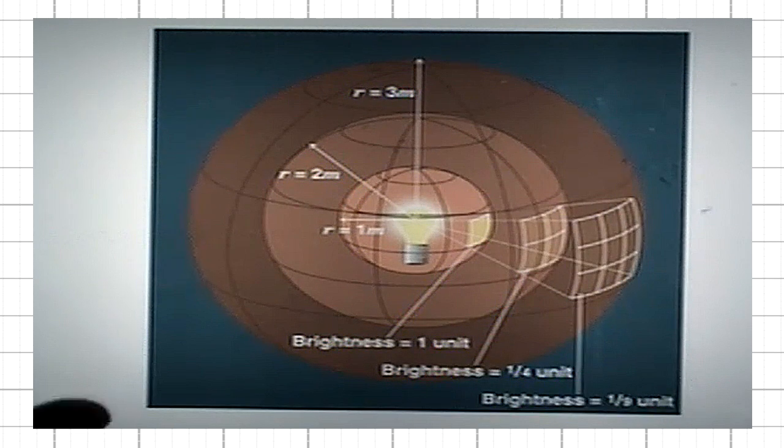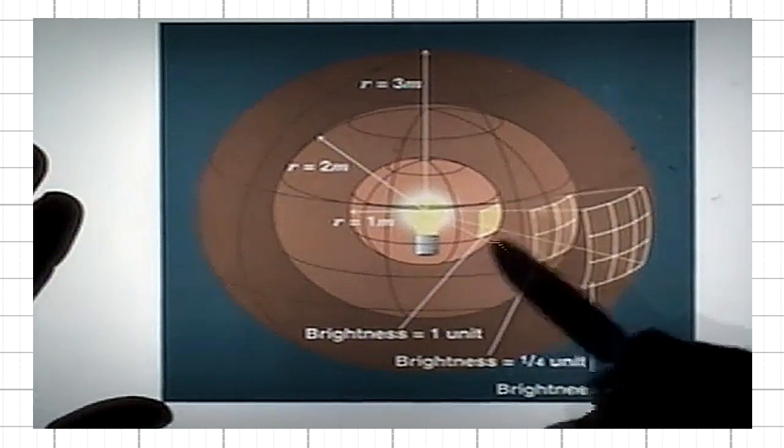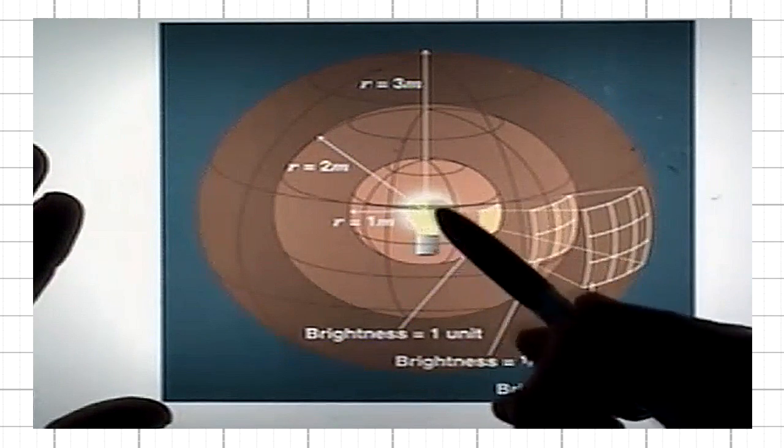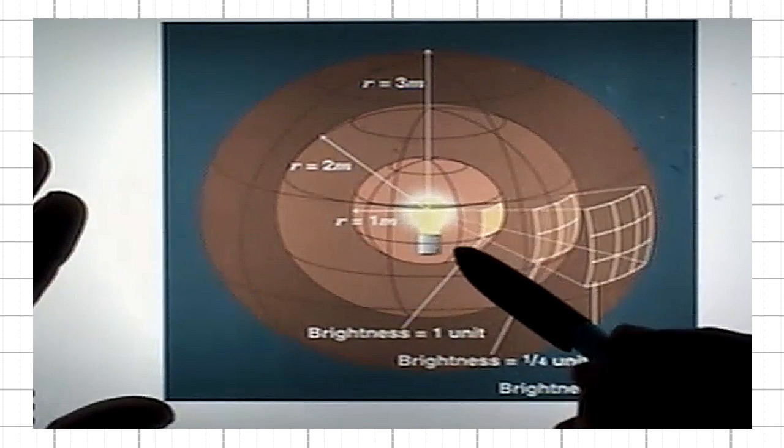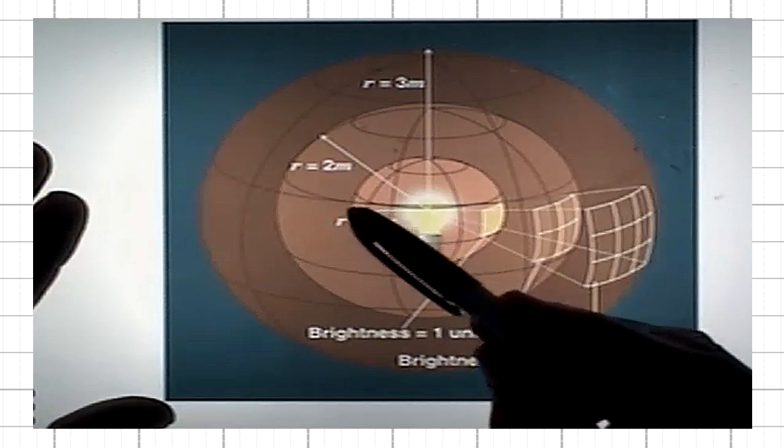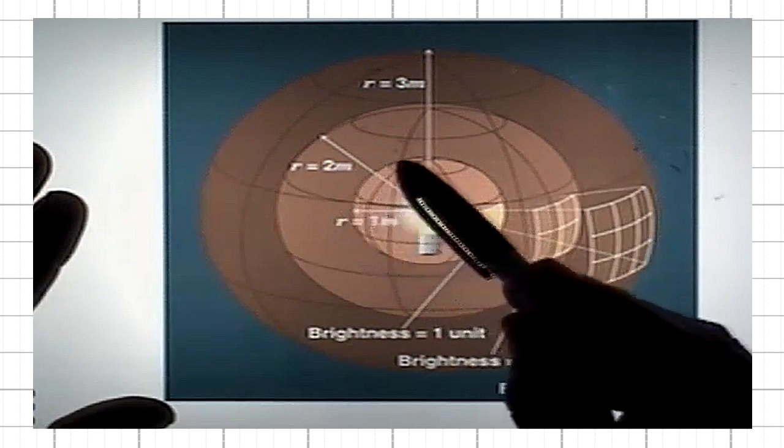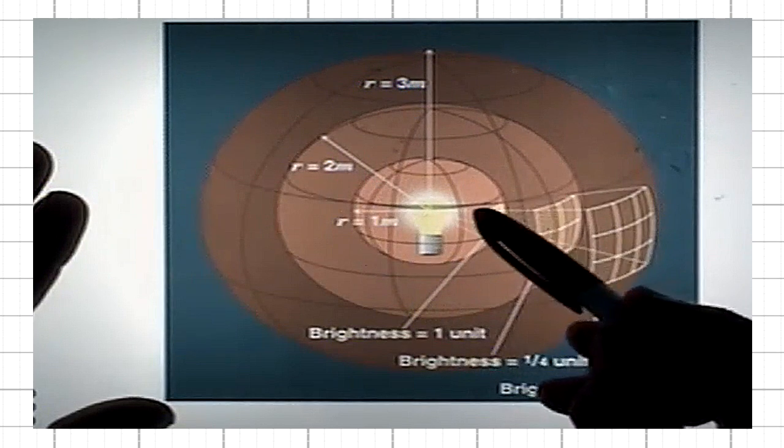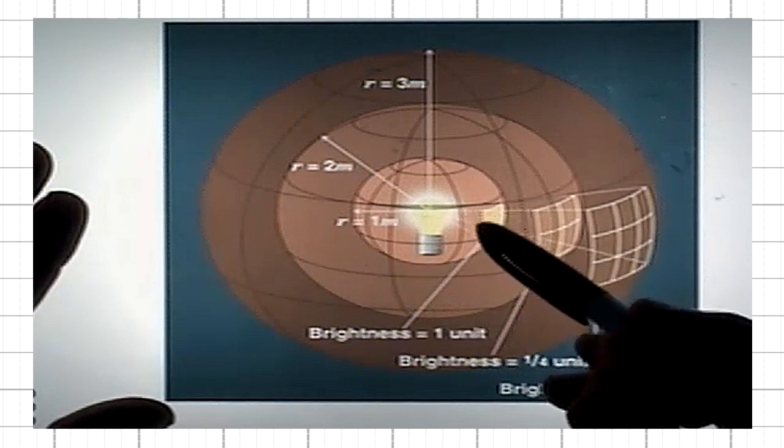This is illustrated on this diagram here. For instance, let's take a light bulb as a source of light energy. At a distance of one meter from it, there is a certain amount of energy that is passing through the unit area.